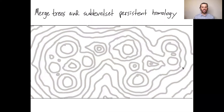Hello everybody. This is Henry Adams from Colorado State University and today I wanted to give an introduction to merge trees and sublevel set persistent homology and the difference between them. What I've drawn here in gray is a topographical map. The gray curves are all lines of equal elevation and we have local minima and saddle points and peaks in this map.